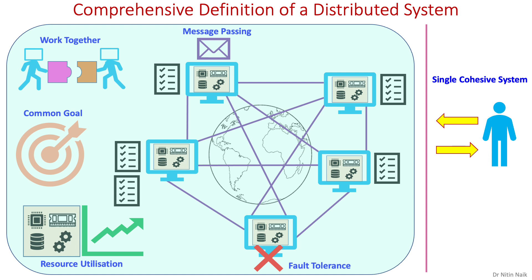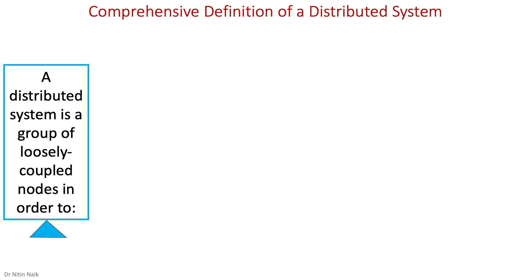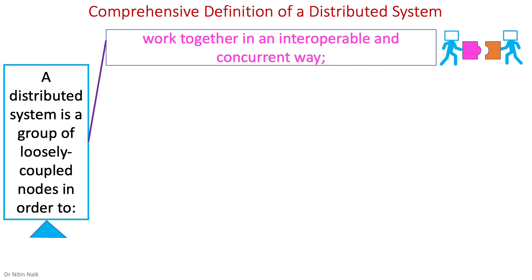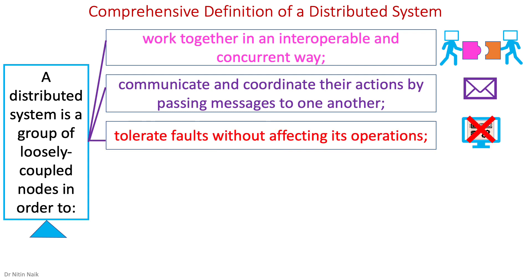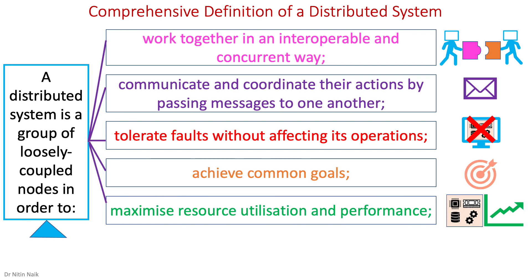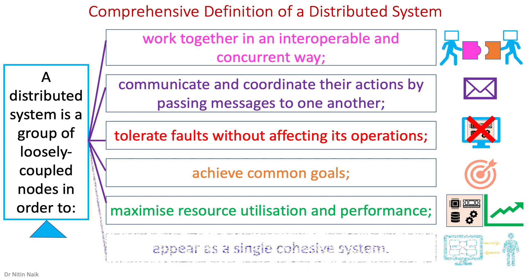This definition covers most aspects of a distributed system. Let's summarize the comprehensive definition of a distributed system. A distributed system is a group of loosely coupled nodes in order to work together in an interoperable and concurrent way, communicate and coordinate their actions by passing messages to one another, tolerate faults without affecting its operations, achieve common goals, maximize resource utilization and performance, and appear as a single cohesive system.